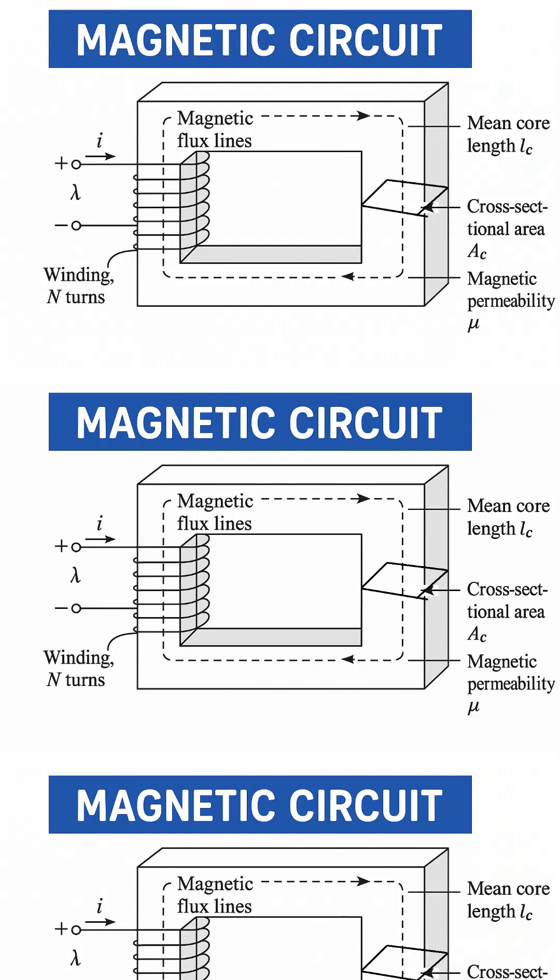In the image, we see a solid rectangular core made from magnetic material. Around one side of this core, a wire is wrapped in several loops or turns.